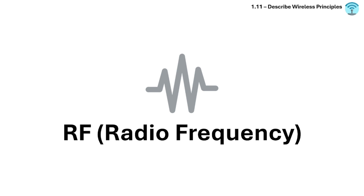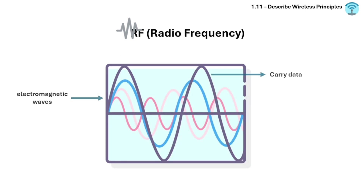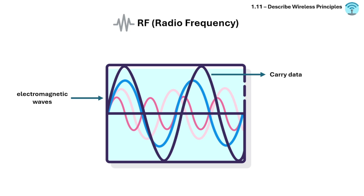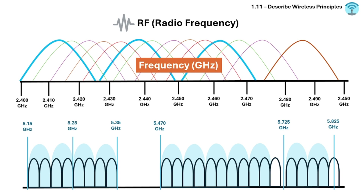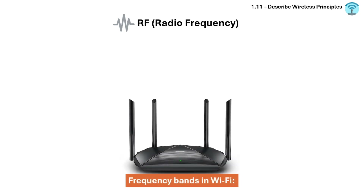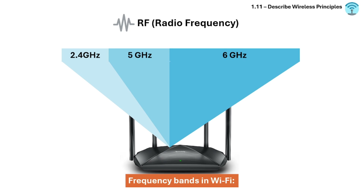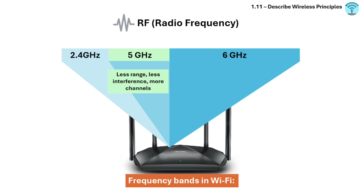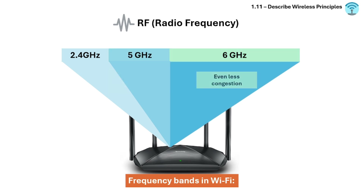Radio frequency (RF) is the wireless medium used to carry data over the air using electromagnetic waves, measured in frequency (GHz) and signal strength (dBm). The frequency bands in Wi-Fi are 2.4, 5, and 6 GHz. 2.4 GHz has greater range but more interference. 5 GHz has less range and less interference but more channels. 6 GHz has even less congestion.